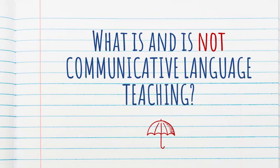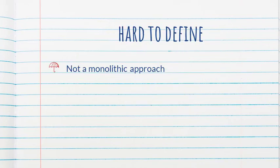What Nina Spada is doing in this book chapter is distinguishing what communicative language teaching is from what it's not. Communicative language teaching is really an umbrella term at this point, and this makes it so hard to define. It is not a monolithic approach, and not everybody identifies with communicative language teaching, but they may identify with approaches that fall under it, such as task-based language teaching, content-based, comprehension-based, etc.